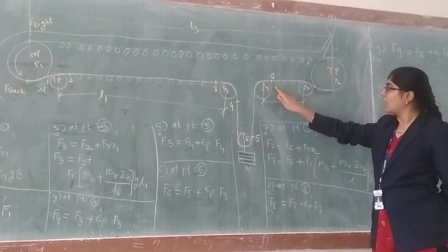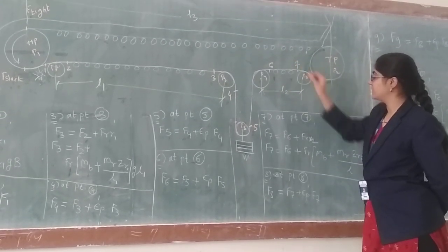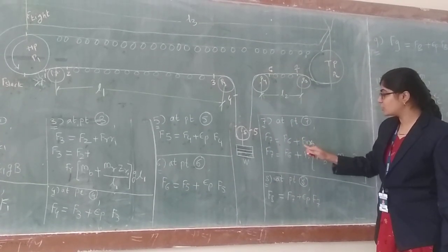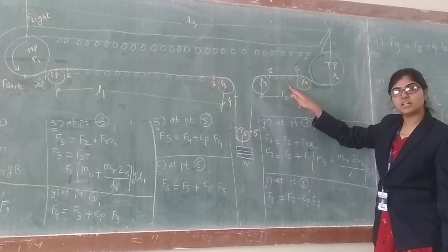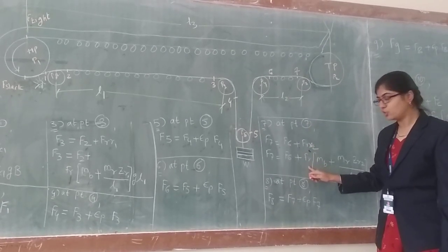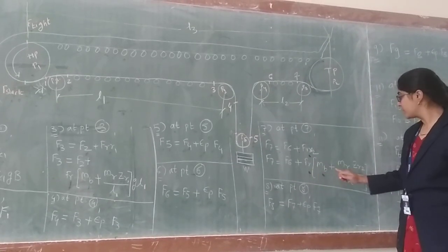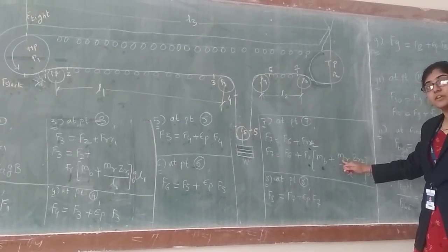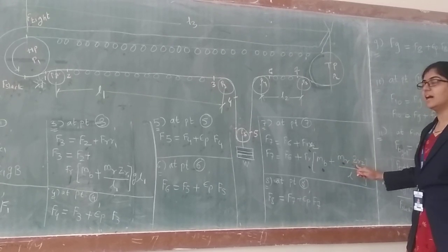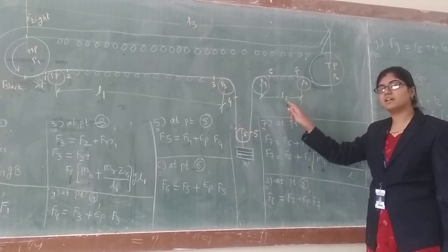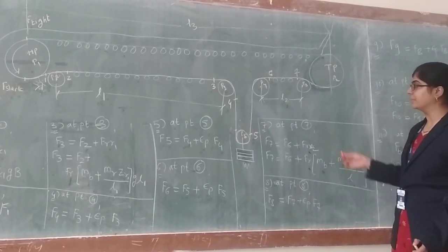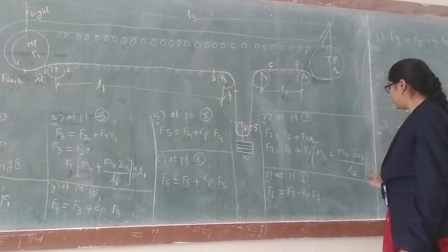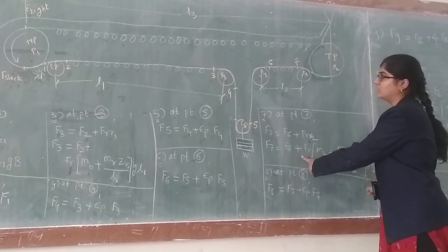Point seven will be taken after the return idler in the second section. F7 is equal to F6 plus the frictional resistance due to the return idler. It will be fr (frictional coefficient) into (mass of belt plus mass of return idler) into ZR2 upon L, into G, where ZR2 is the number of return idlers in this section. The number of return idlers will be different here compared to the previous section.